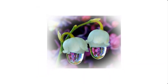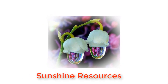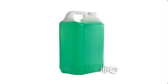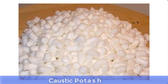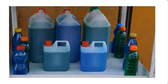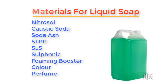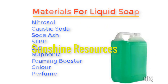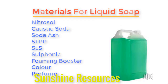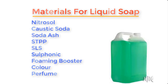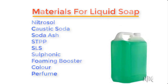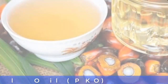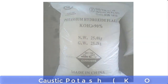Hello and welcome. My name is Sunshine, the project manager at Sunshine Resources. In this video I'm going to show you how to make liquid soap with just two materials: vegetable oil and caustic potash. In our previous videos we produced liquid soap using about eight or nine items such as nitrosol, caustic soda, soda ash, SDPP, SLS, sulfonic acid, foaming booster, color, and perfume.